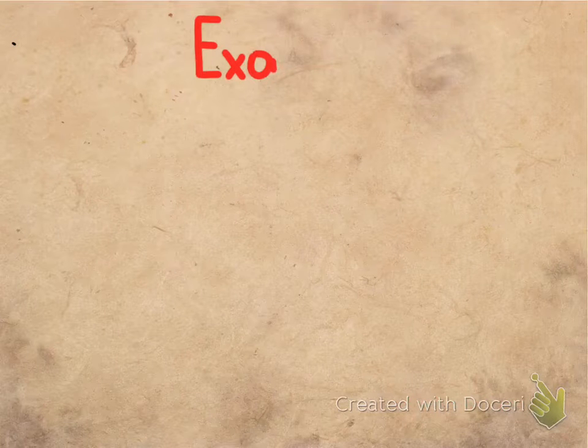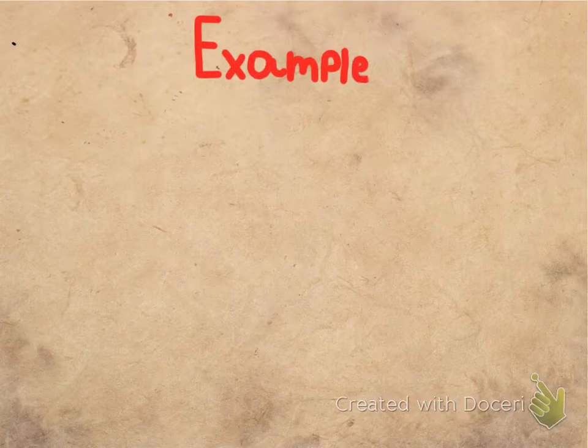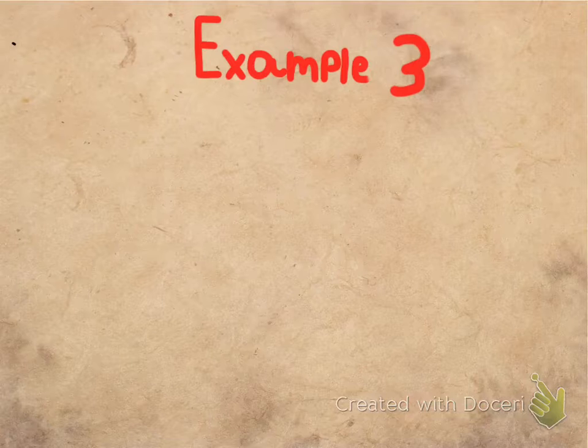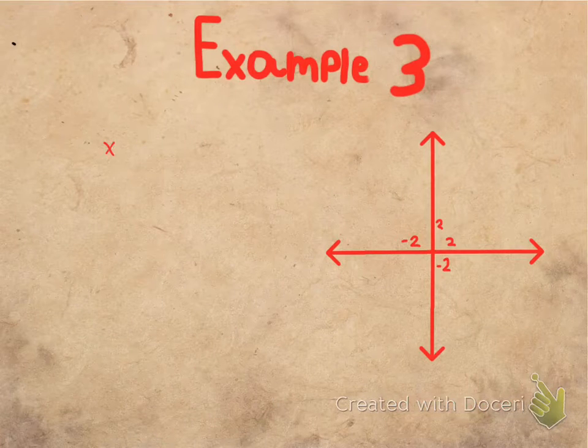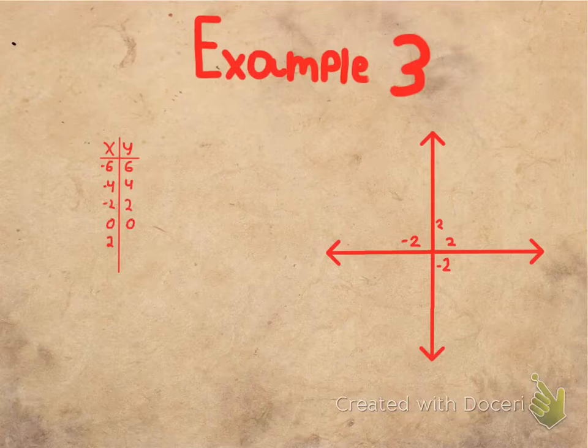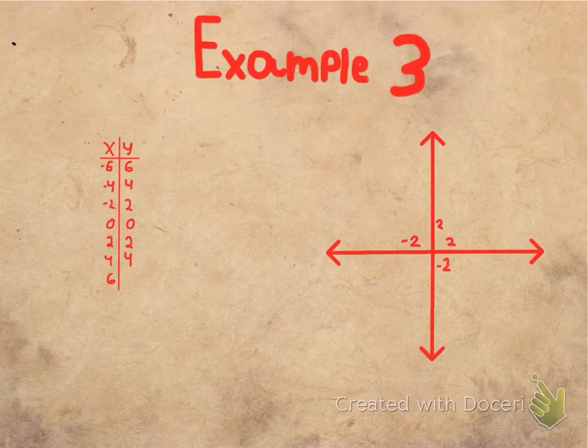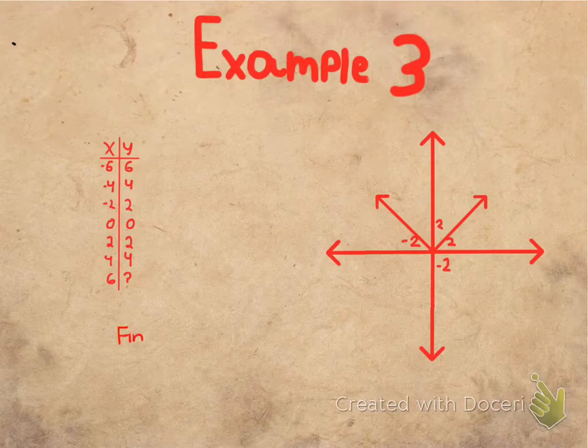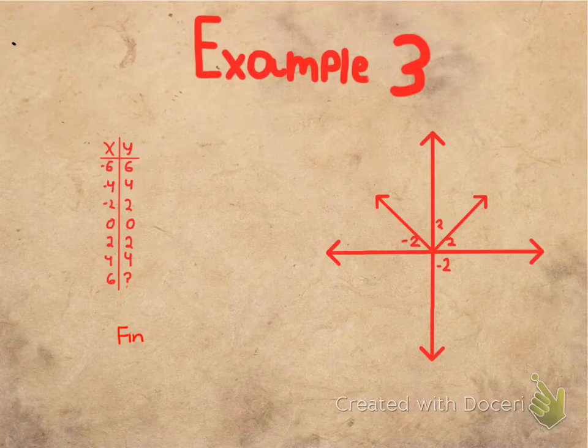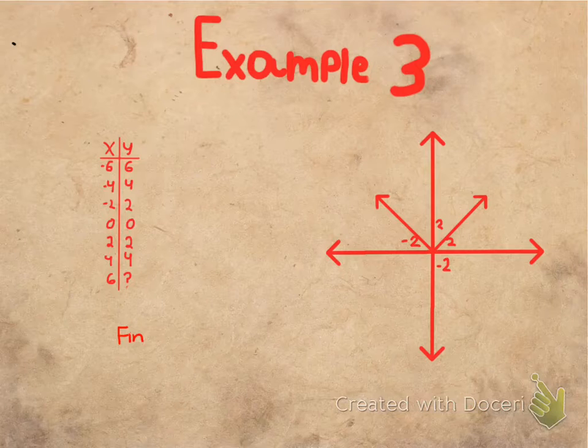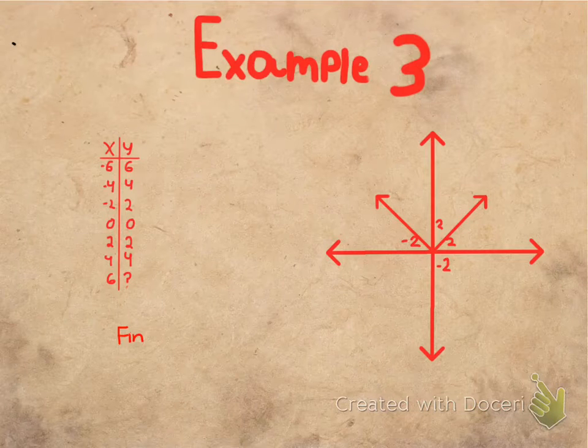Let's move on to example number three. Here, I will be teaching you how to graph an absolute value equation. So now we have a table laid out for you, right here. And the graph of this table is drawn next to it. Please take note of that.